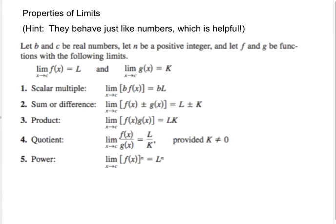So, properties of limits — they behave like numbers, which is pretty helpful. Let B and C be real numbers and let N be a positive integer, with F and G being functions that adhere to the following limits. So the limit as X approaches C of F of X is L, meaning the output would be L, and the limit as X approaches C of G of X is K. If you multiply a limit by a scalar, you just multiply the answer by that number.